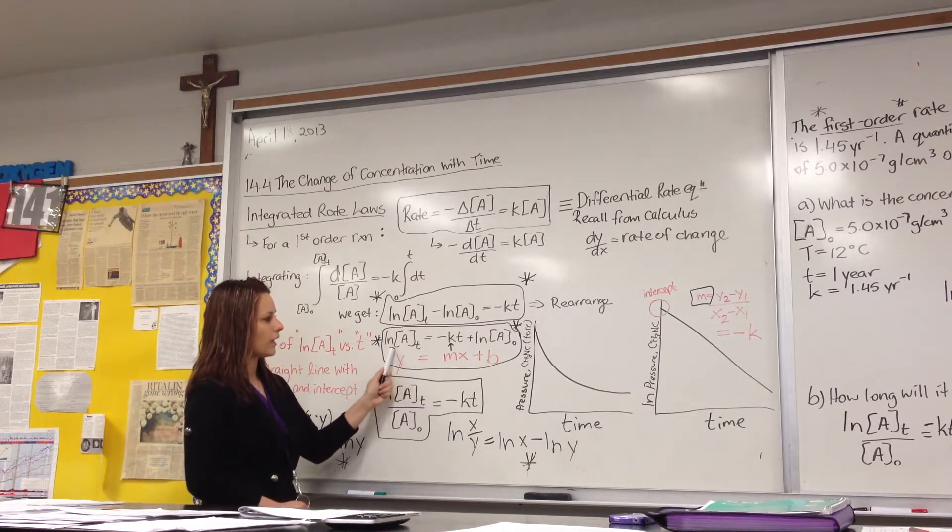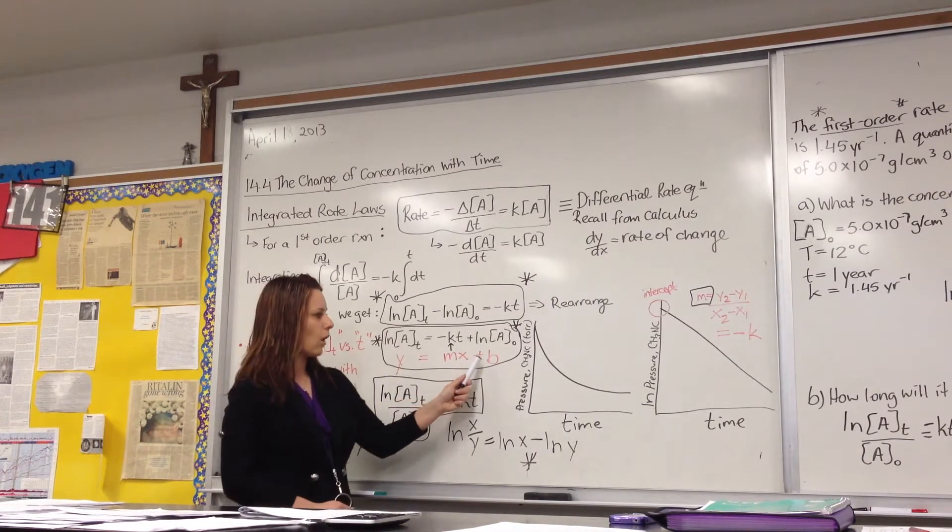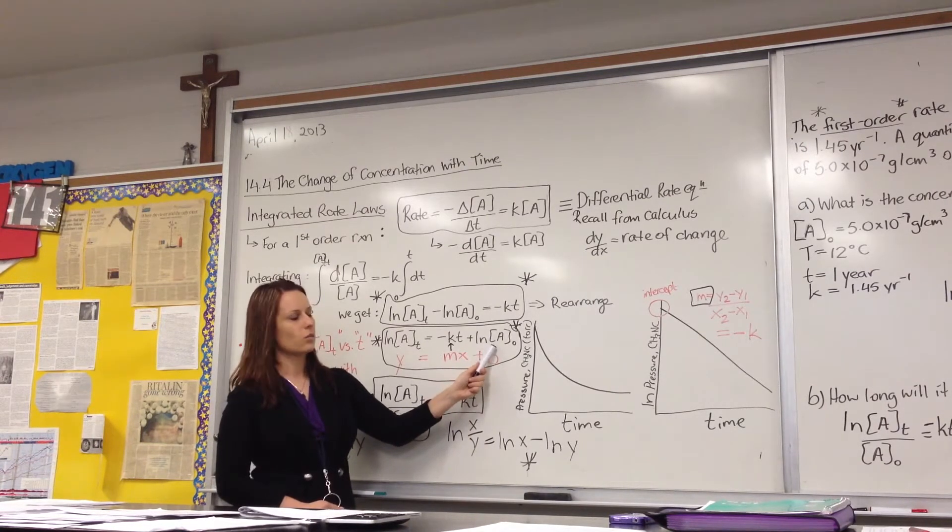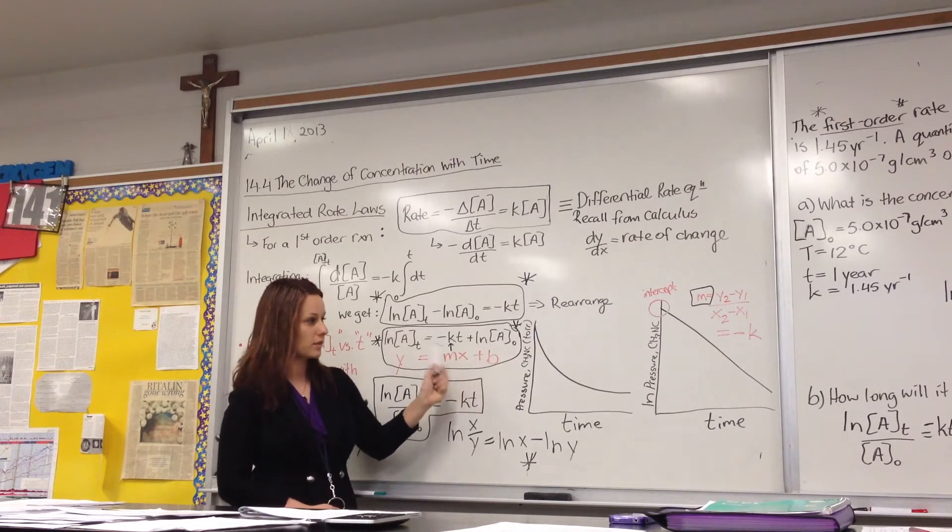T is your X value, so you'd be graphing the ln of A at T as your Y versus T, which is your X, and your Y-intercept is the ln of A naught, which would be the ln of the initial concentration of A at time equals zero.